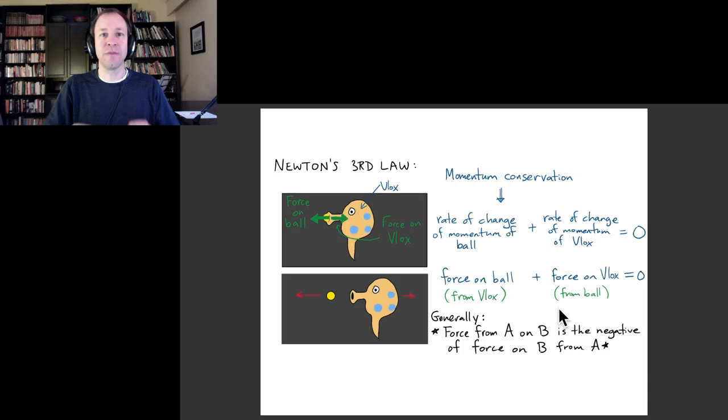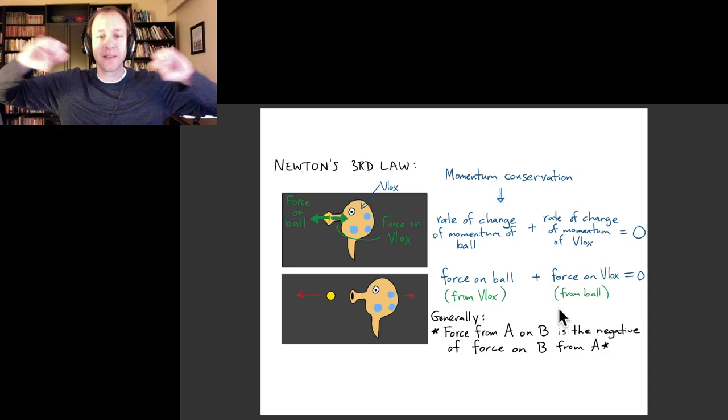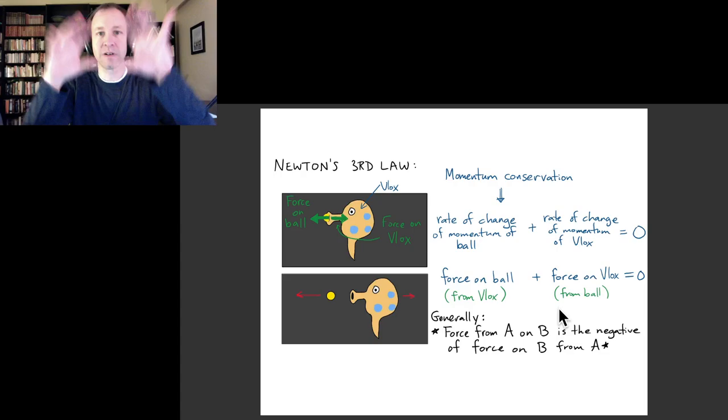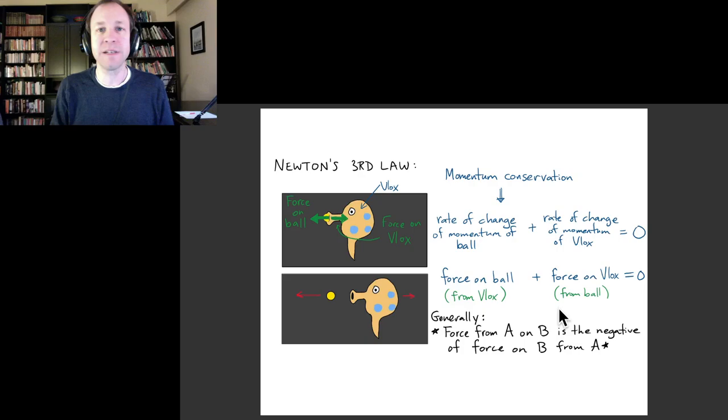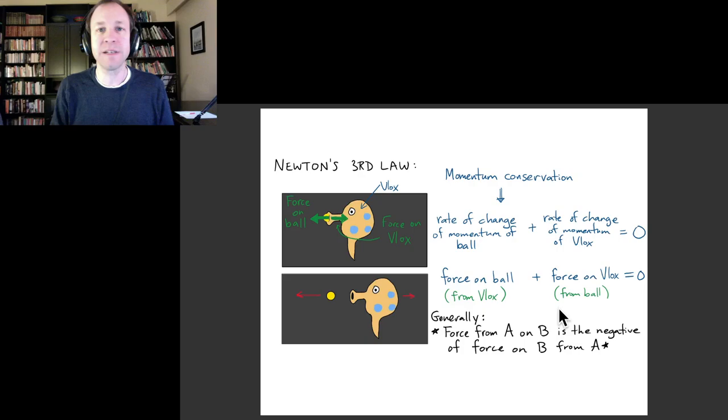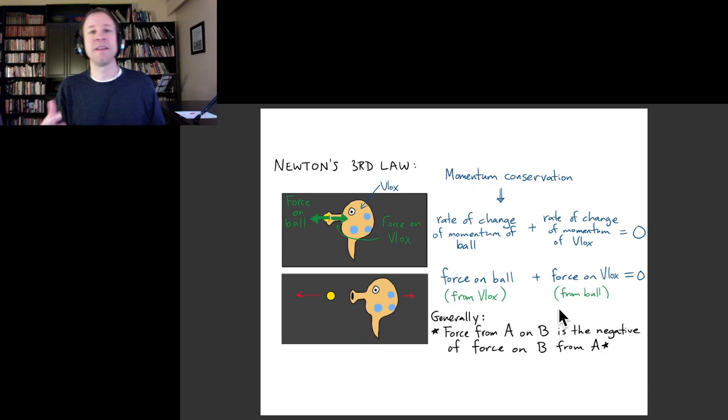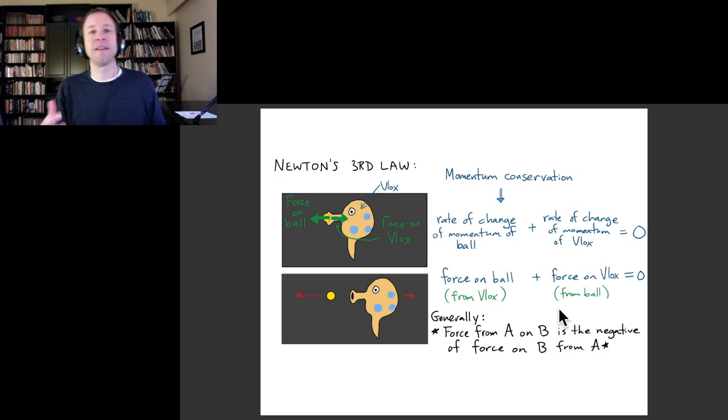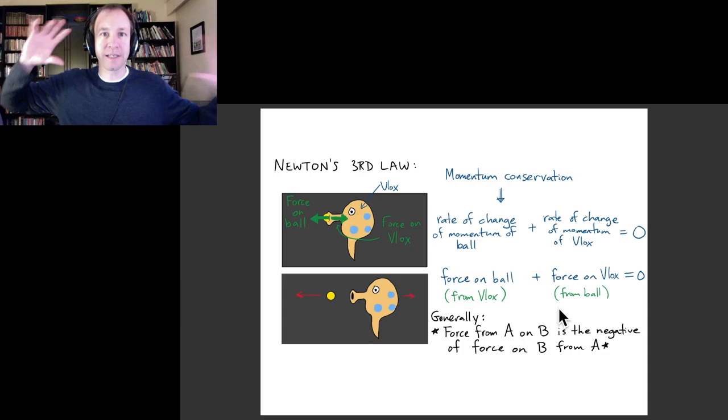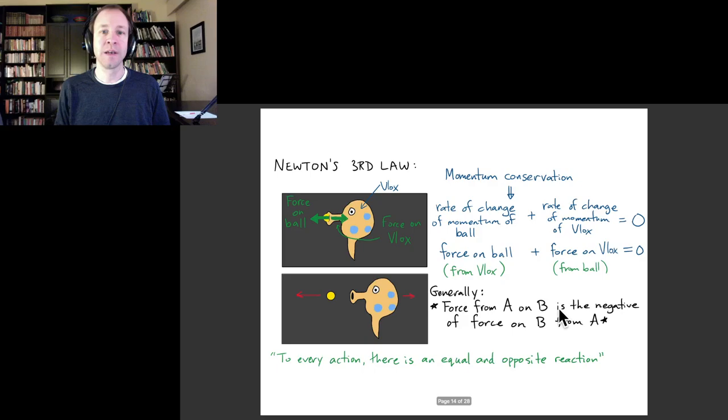And we can see it most easily if we imagine that we're in outer space and there aren't any other forces. Then this thing is just absolutely required in order for momentum to be conserved. But it's a rule that applies everywhere, even on earth. If I push on a ball in space, it's really just the same as pushing on the ball on earth. I still feel the force backward. So even here on earth when there's lots of forces and it's complicated, I push on the wall, the wall is going to be exerting a force backward on me.